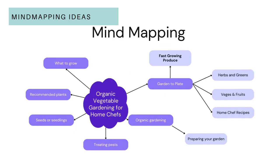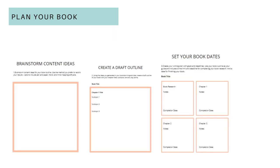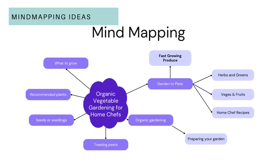Before I mentioned a mind map, and this is what I mean. Some people would rather do this type where you're writing words nice and neat. Some people like a more visual approach. Another way to do the mind map is with post-it notes. This is the core idea: organic vegetable gardening for home chefs. These are the potential other ideas you might like to write about, and from this particular 'garden to plate' idea, these are some further ideas.